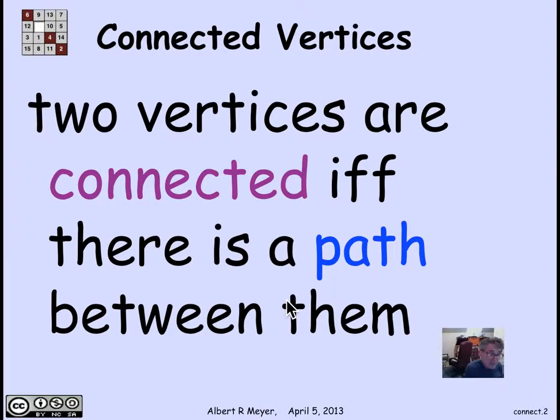In a directed graph, the path would have a direction. In a simple graph, paths don't have direction, so A is connected to B if and only if B is connected to A. It's a symmetric relation.